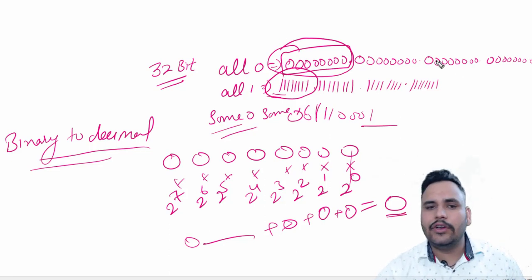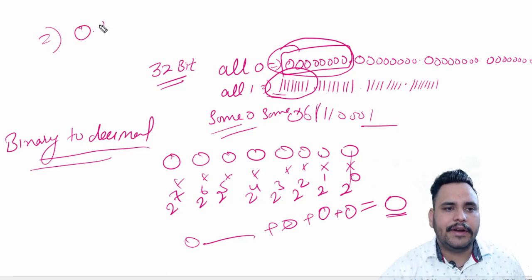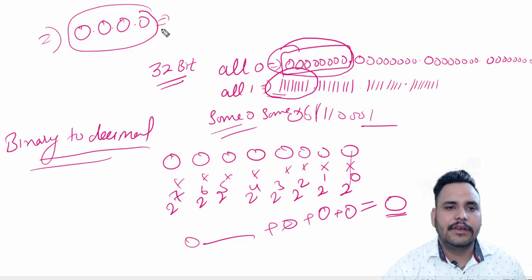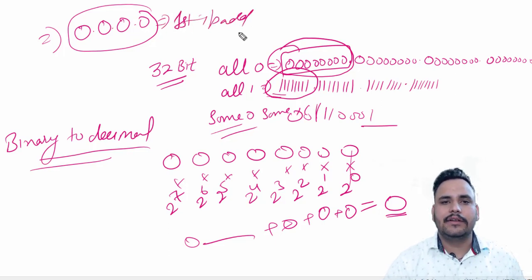So 32 zeros means our first IP address should be 0.0.0.0. This is the very first IP address in decimal.